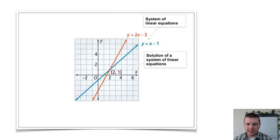Here's an example. Note the two lines graphed: y equals 2x minus 3, the equation to represent one of those lines, and y equals x minus 1. Together, they make a system of linear equations. The solution of this particular system of linear equations is the point (2, 1), because it's a point that is a solution of both of the equations.